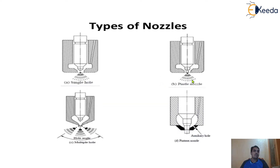In the pintle nozzle, some modification is made in the single hole nozzle. A circular pintle is attached to minimize the dribbling effect. Dribbling is a kind of leakage where, after operation of the injector, some amount of fuel droplets still come inside the engine cylinder. To avoid this dribbling effect, at the mouth of the nozzle there is a small ball-like element fitted, which is called the pintle. That is why this nozzle is called the pintle nozzle.